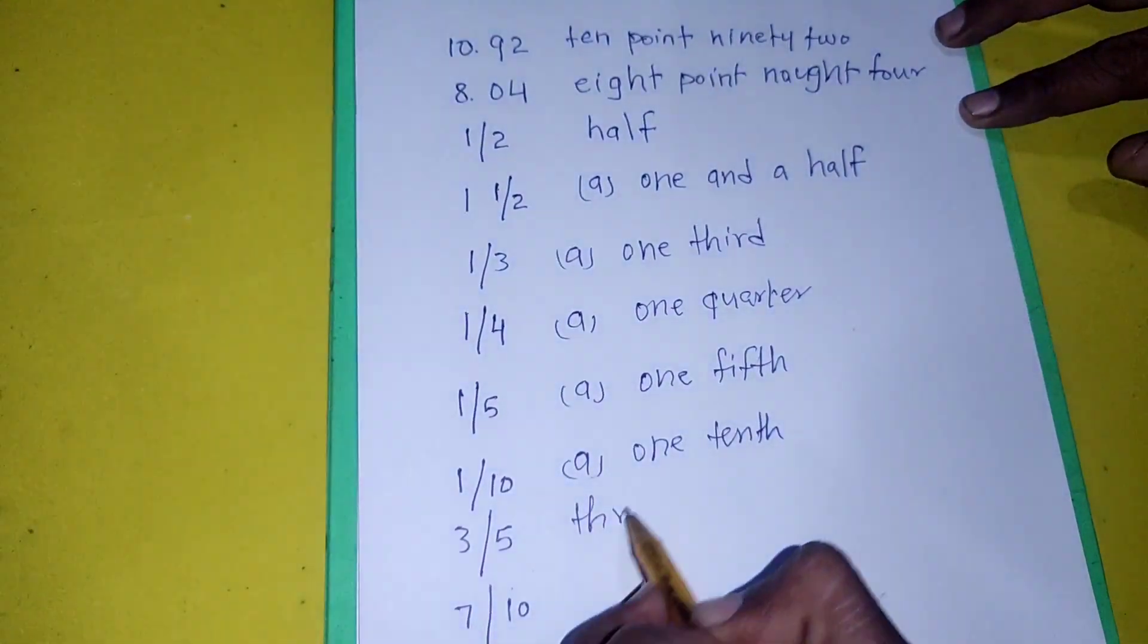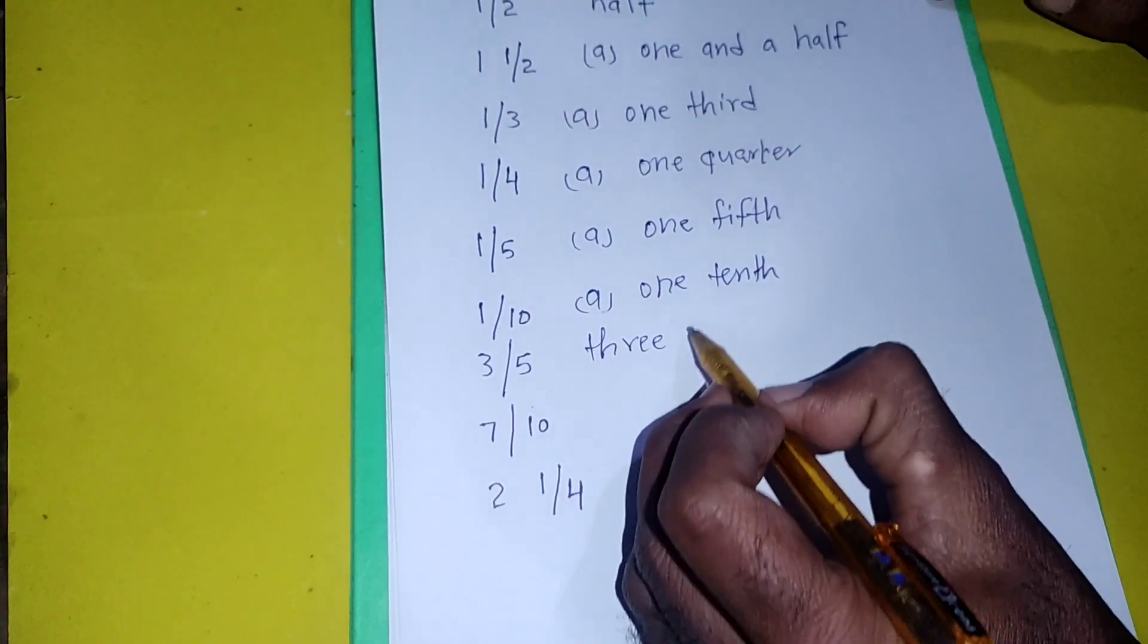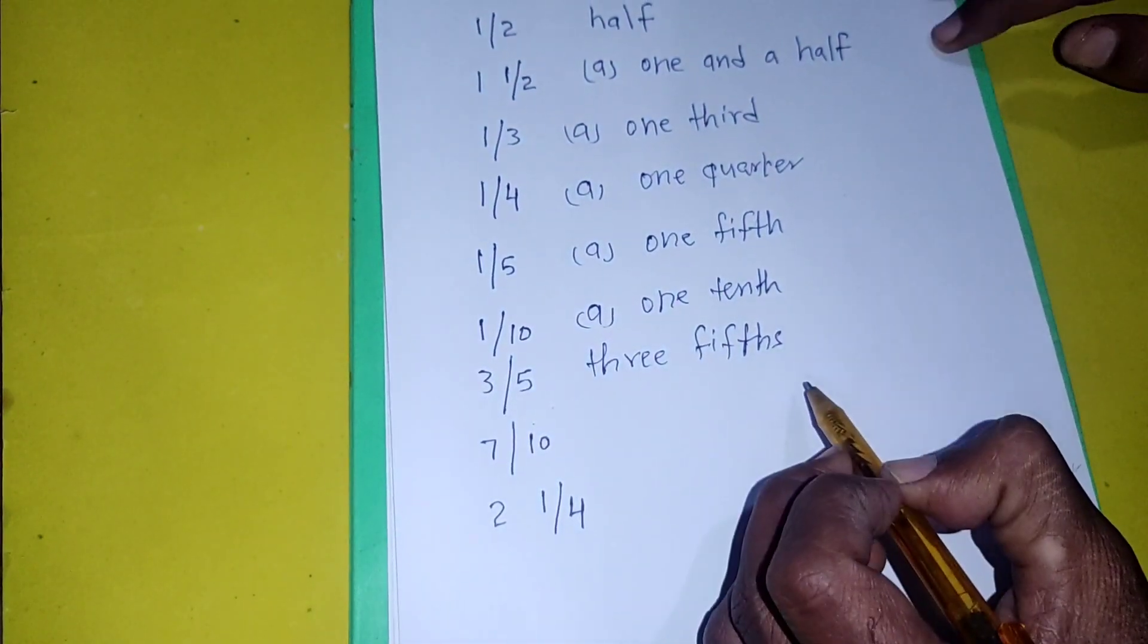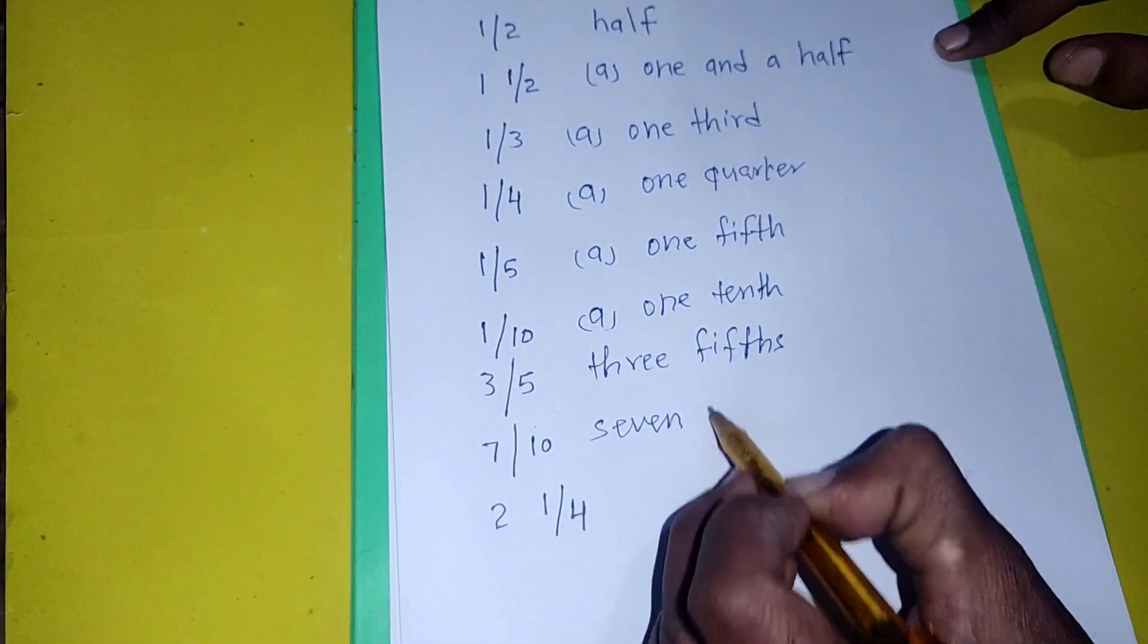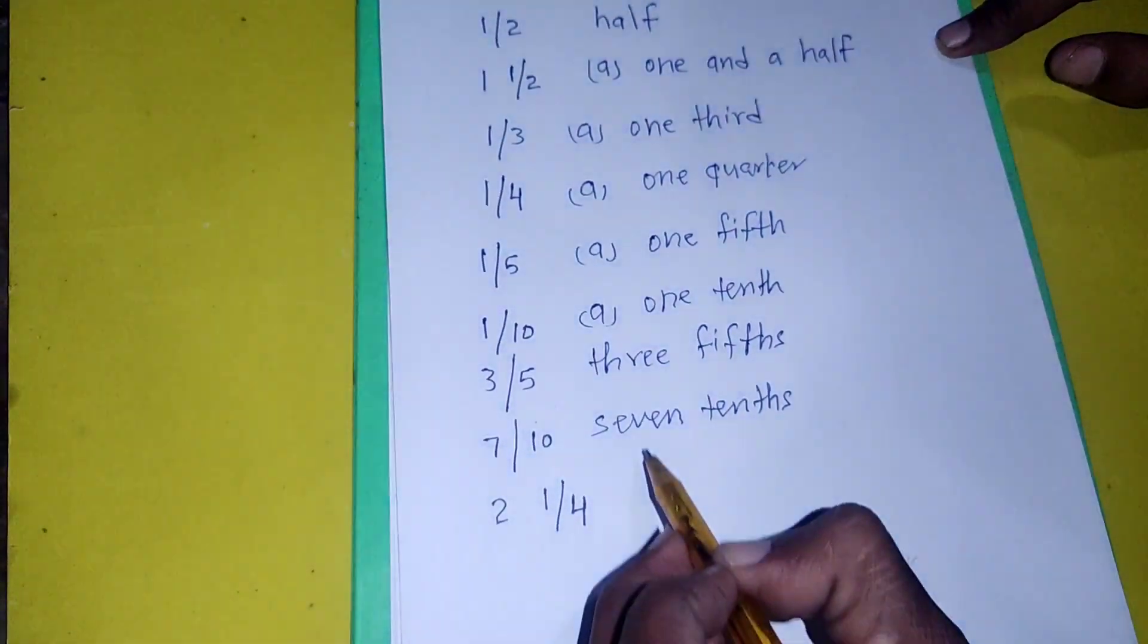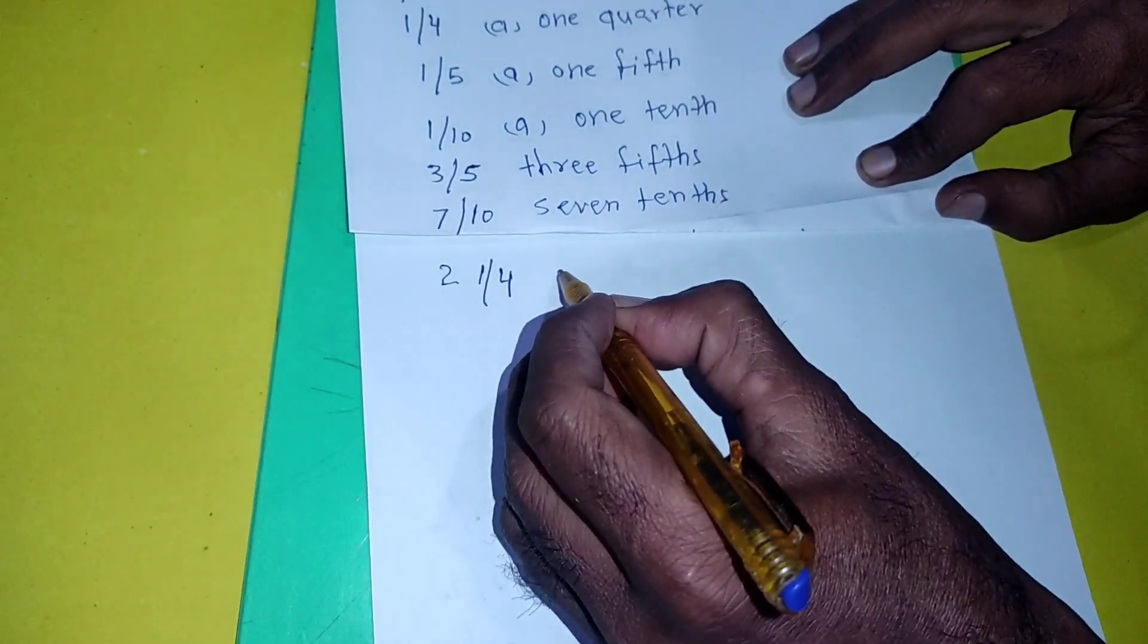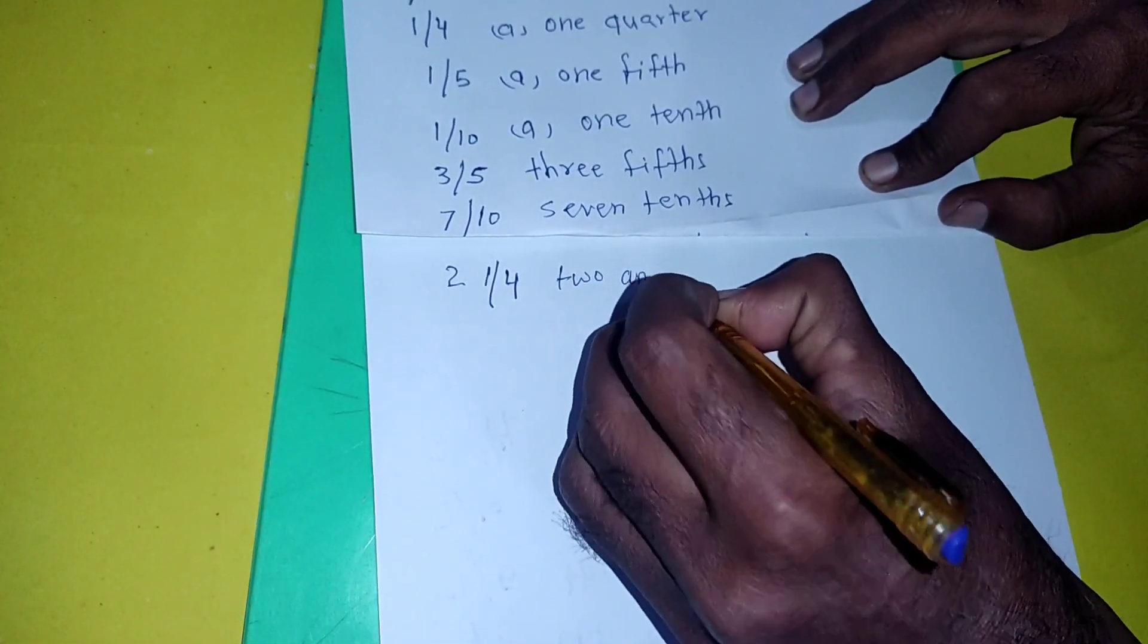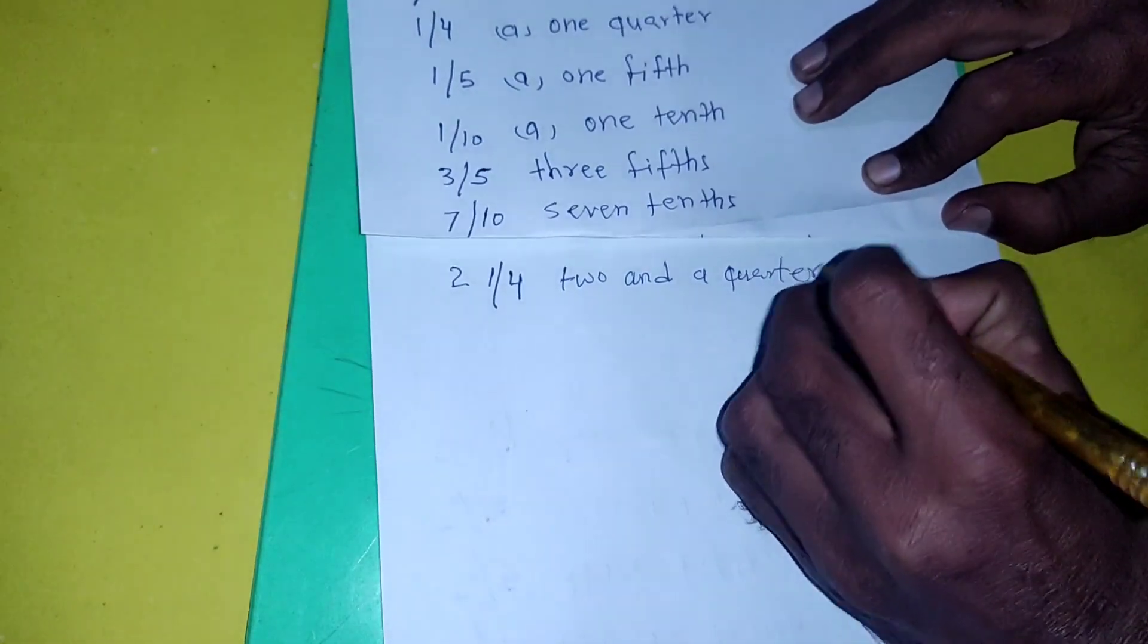Three fifths, three fifths. Seven tenths. Now here we have the last figure: two and a quarter, two and a quarter.